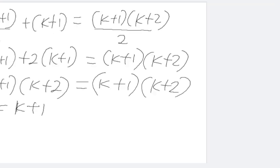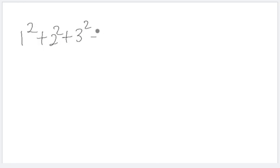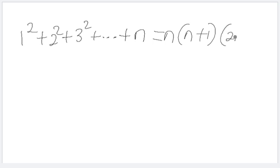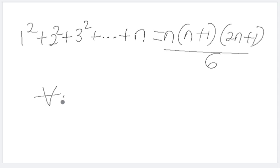Now I want you to try this on your own: use mathematical induction to show that one squared plus two squared plus three squared plus ... plus n squared equals n times (n plus one) times (2n plus one) over six, for all integers n greater than or equal to one. I wish you luck trying this — I'm sure you're going to enjoy this exercise. Bye for now.